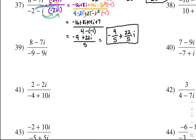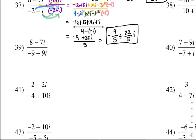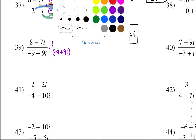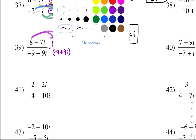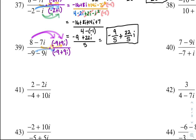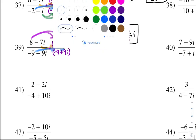Problem 39. We've got to multiply top and bottom by the conjugate — negative 9 plus 9i. Remember, it's the opposite of that sign — that's the conjugate. So we distribute the 8 to both, distribute the negative 7i to both, then for the denominator distribute negative 9 to both, and distribute negative 9i to both.